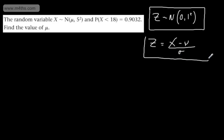So let's apply it to this case, then all we'll need to do is go to the standard normal table and read our value. So in this particular case, we're being told the probability of X being less than 18 is 0.9032.